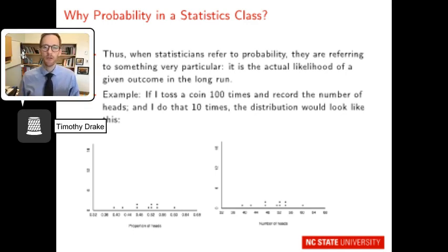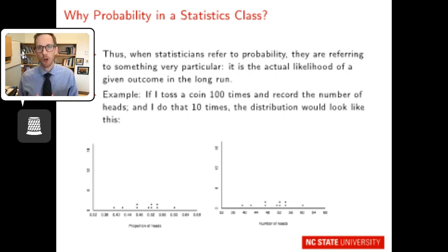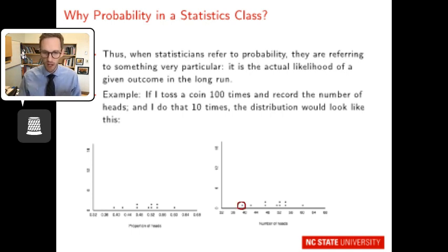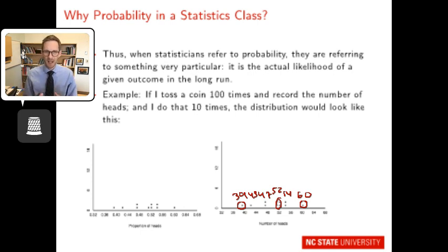When a statistician refers to probability, they're referring to the actual likelihood of a given outcome in the long run — over many repeated events. If I flip a coin a hundred times and record the number of heads, and repeat that 10 times, I start to get a distribution. Some trials yielded around 39 heads, some around 60, but most clustered near 50-54. I'm building a distribution from a limited number of trials.